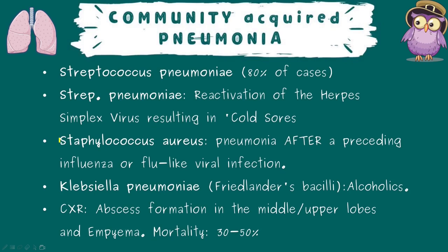Staph classically causes a cavitating pneumonia after a viral or influenza-like infection. It is common in immunocompromised patients, IV drug abusers, patients with a central line, and those with underlying diseases such as leukemia, lymphoma, or cystic fibrosis. Chest X-ray shows bilateral cavitating bronchopneumonia. Pneumothorax, effusion, and empyema are common. Treat with IV flucloxacillin, or clarithromycin in penicillin-allergic patients.